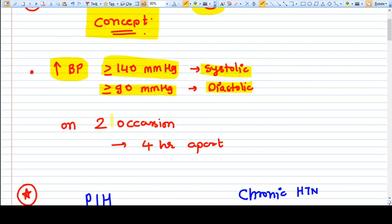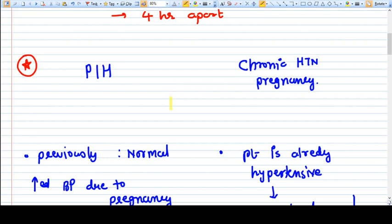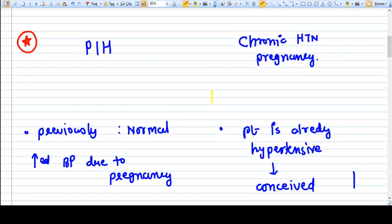This increase must occur on two occasions, four hours apart. There are two terms: pregnancy induced hypertension and chronic hypertension in pregnancy.